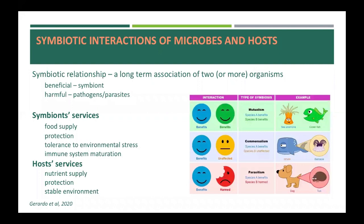Usually, the microbiota and the host live in a symbiotic relationship, which broadly means a long-term association of two or more organisms. This association can be either harmful or beneficial to the other partner, but we generally prefer to call beneficial microbes symbiotes. Harmful microbes are less likely to form long-term relationships with their host and are called pathogens or parasites.